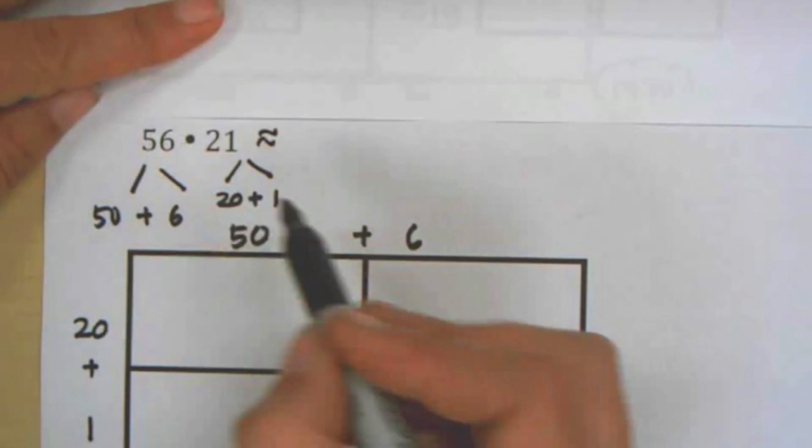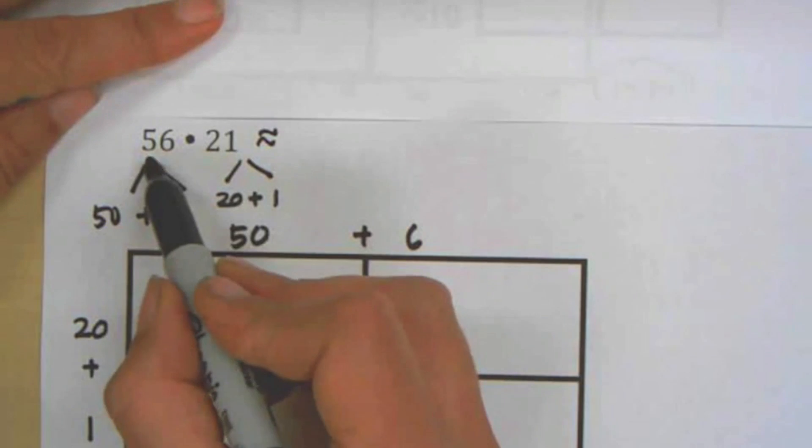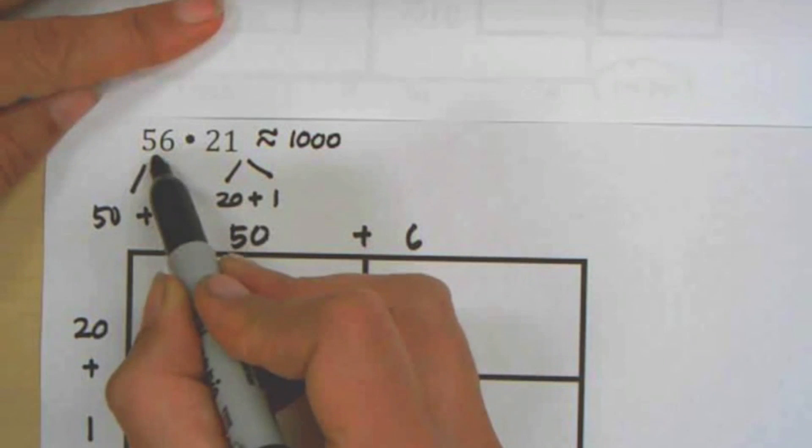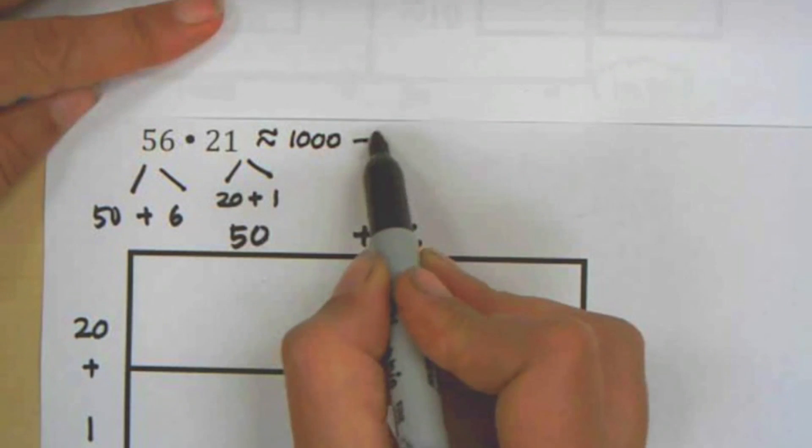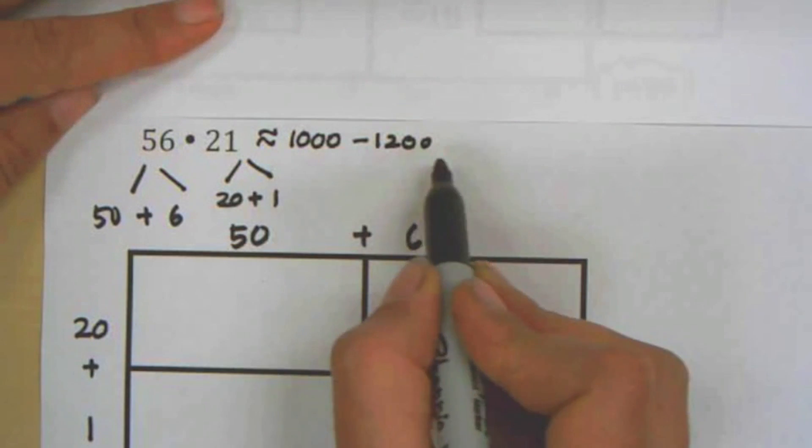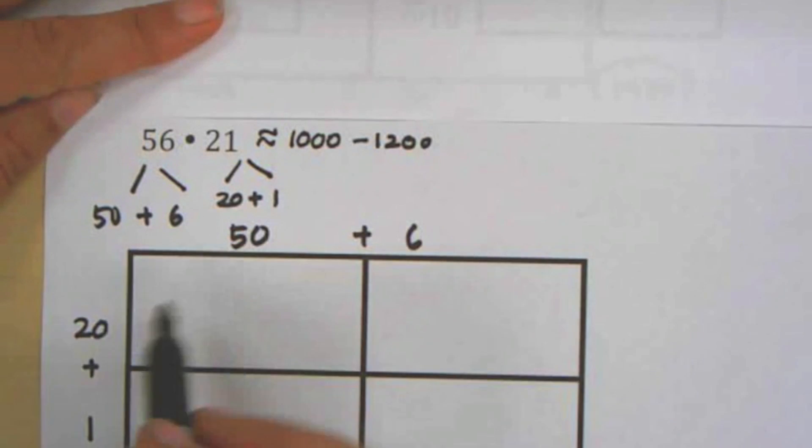And once again, I can estimate ahead of time to give myself a sense of how big my number is going to be. So it's like 50 times 20 is about 1,000. This was 60 times 20, that's 1,200. So my answer is going to be somewhere between those numbers.